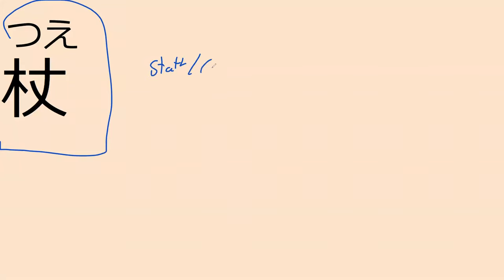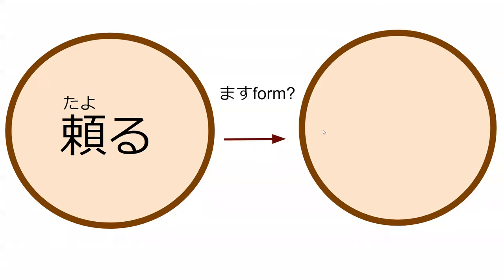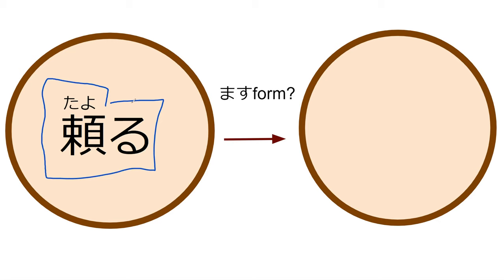Our next word is 杖, which in this context is a staff or a cane — like something you need to help you stand. Like from Howl's Moving Castle — there's a cane in there. Do you know what the masu form of 頼る is? 頼ります. No — 頼ります. Perfect, yes — 頼ります, because 頼る is a u-verb.